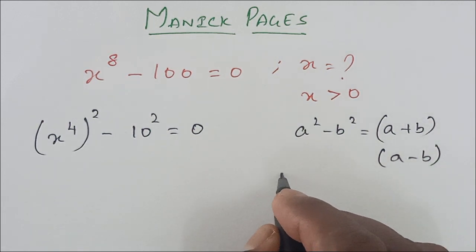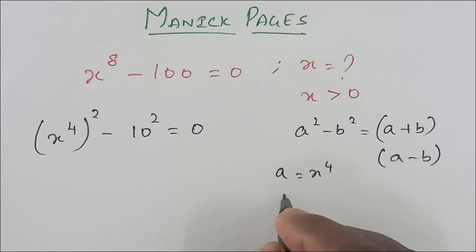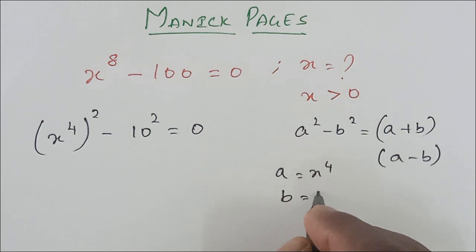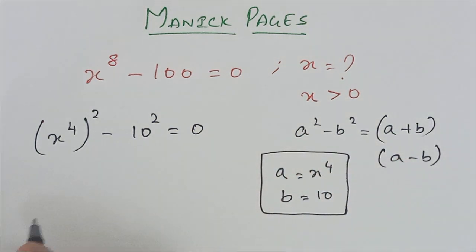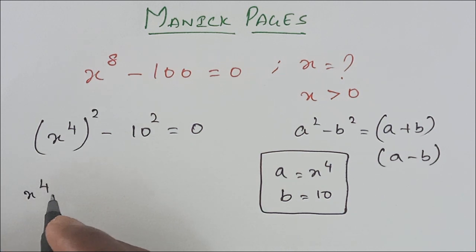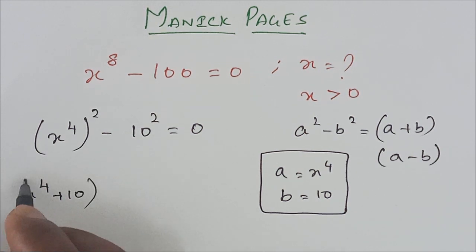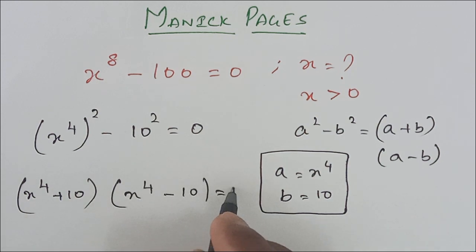Here a is equal to x^4 and b is equal to 10. Applying this formula, we get (x^4 + 10)(x^4 - 10) equals zero.